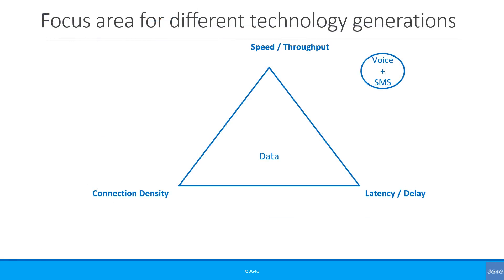If we look at mobile or smartphones in general, they do two broad things. Voice and SMS is one, and data is the other. The apps on your devices, as well as browsing the internet, is part of data. The main focus of 2G was voice. SMS came later and data came even later as part of GPRS, or 2.5G.